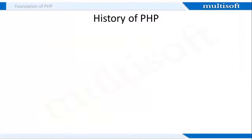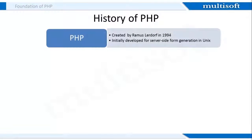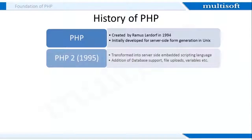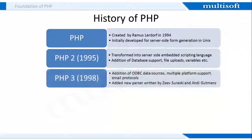This programming language is quite rich with its history. It was created in 1994 and was initially developed for HTTP usage, logging, and server-side form generation in UNIX. In 1995, it became PHP 2 with added features: the language was transformed into a server-side embedded scripting language, and database support, file uploads, variables, arrays, and recursive functions were added. In 1998, it became PHP 3, adding support for ODBC data sources, multiple platform support, and email protocols, along with a new parser by Zeev Zurasky and Andy Gutmans.